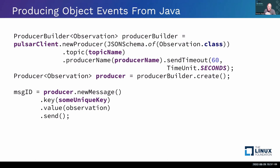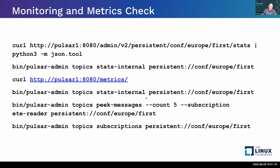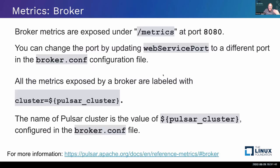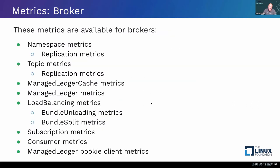Very easy to produce events from Java using the schema. Just point it to a Java class — no need to create a schema with a schema editor. Create a class with the field names and types and you're ready to go. You can create a formal Avro schema if you prefer. You can send with timeouts, sync or async — lots of options. There's lots of access to metrics via REST API, Grafana, JMX, or command line tools.